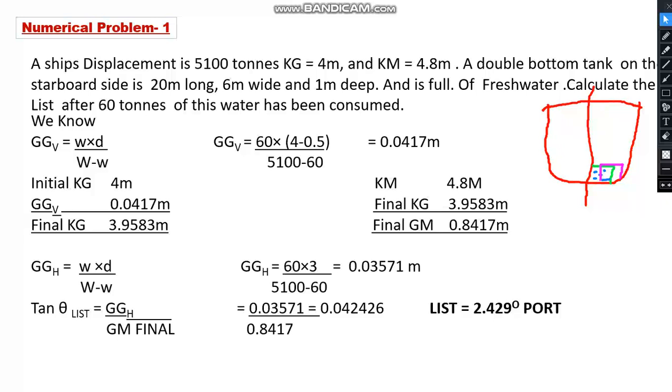So I hope the question number 1 which we have discussed now is well understood by you. The only assumption, as I told you, is that the double bottom tank we will take starting from the central line towards your starboard side. So that is why I assume it starts from central line and runs towards your starboard side. The length in longitudinal direction is 20, width is 6, and the height is 1 meter.